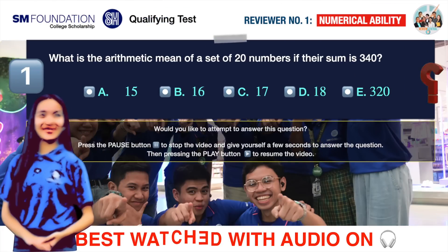Question number one. What is the arithmetic mean of a set of 20 numbers if their sum is 340? A. 15, B. 16, C. 17, D. 18, E. 320.